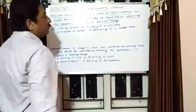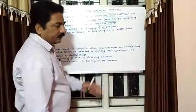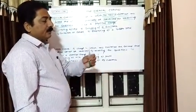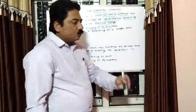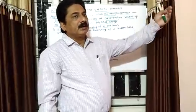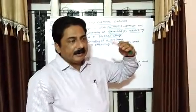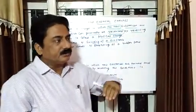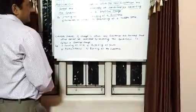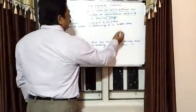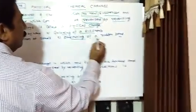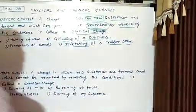Formation of clouds — what happens here is that water gets heated, becomes clouds, and the clouds again come back to the phase of water. Stretching of rubber is a very good example for physical changes.